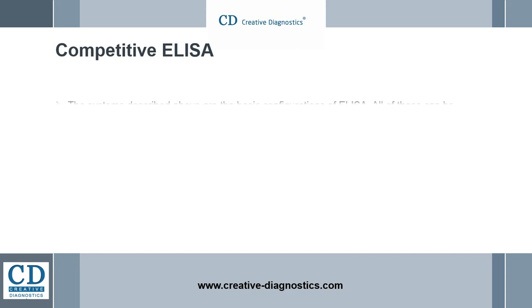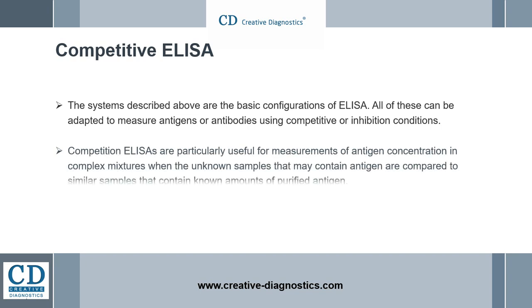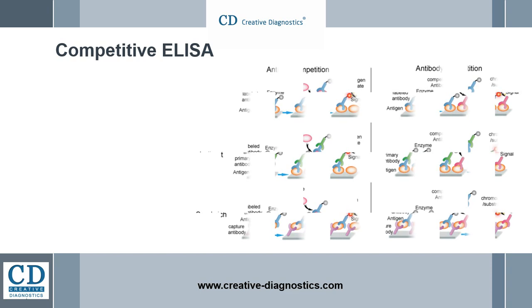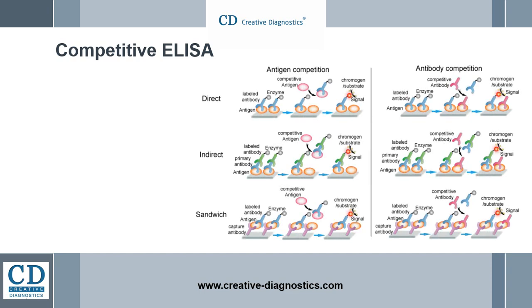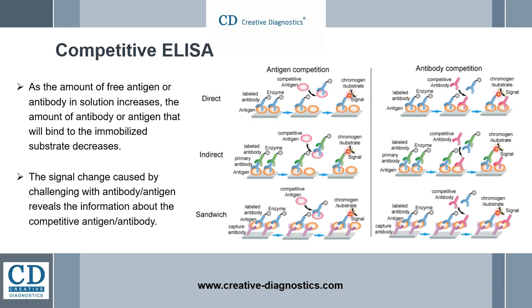Competitive ELISA. The systems described above are the basic configurations of ELISA. All of these can be adapted to measure antigens or antibodies using competitive or inhibition conditions. Competition ELISAs are particularly useful for measurements of antigen concentration in complex mixtures, when unknown samples that may contain antigen are compared to similar samples that contain known amounts of purified antigen. Each assay requires pre-reaction of reagents to obtain optimal conditions. These optimal conditions are then challenged either by the addition of antigen or antibody. As the amount of free antigen or antibody in solution increases, the amount of antibody or antigen that will bind to the immobilized substrate decreases. After a washing step, chromophore substrate is added to generate a signal — namely color change or light. The signal change caused by challenging with antibody or antigen reveals information about the competitive antigen or antibody.